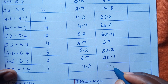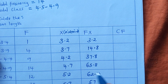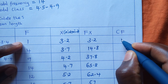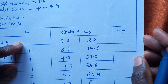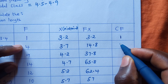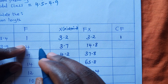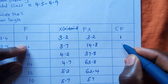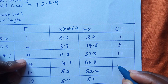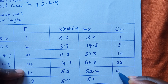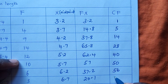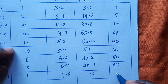For cumulative frequency, you work with the frequency column. The first value transfers directly. Then you add each successive frequency: 4 plus 1 gives 5; 5 plus 9 gives 14; 14 plus 14 gives 28; 28 plus 12 gives 40; 40 plus 10 gives 50; then 56, 59, and finally 60.